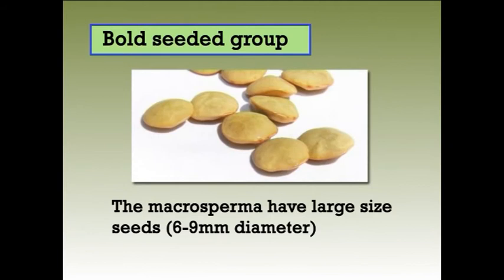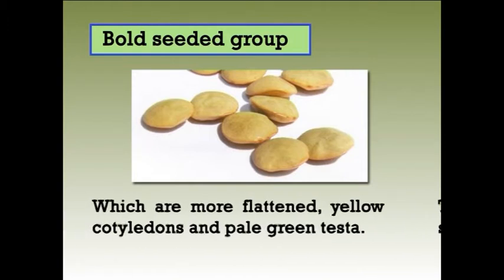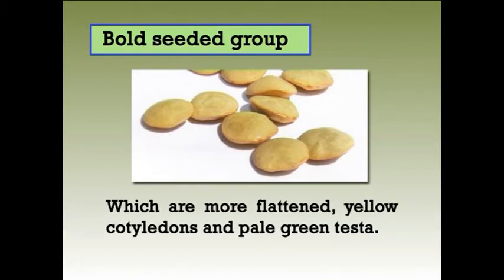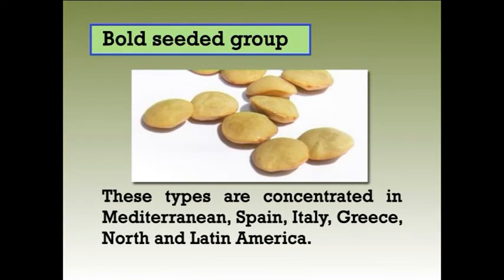Macrosperma have large size seeds of 6 to 9 mm diameter, which are more flattened, with yellow cotyledons and pale green testa. These types are concentrated in the Mediterranean region — Spain, Italy, Greece, and North and Latin America.